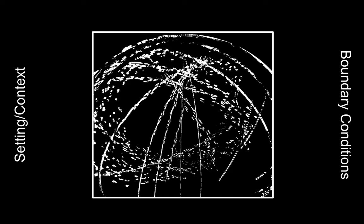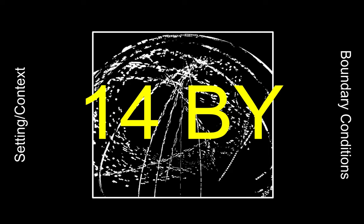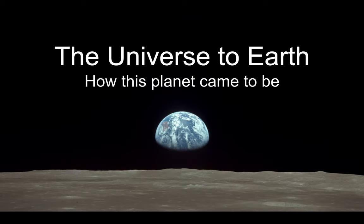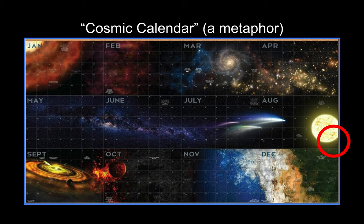So let's set up the boundaries. Let's look at the context of what we're doing. Let's draw a square around what we're studying. It's a rather large square — 14 billion years. Actually, it's 13.8 billion years, but we won't tell anybody. So we're looking at the universe as it relates to Earth itself, how our planet came to be. We're going to be using the cosmic calendar — pretending that we can smash down the 14 billion years of the universe down to 365 days. On January 1st, the Big Bang occurs.